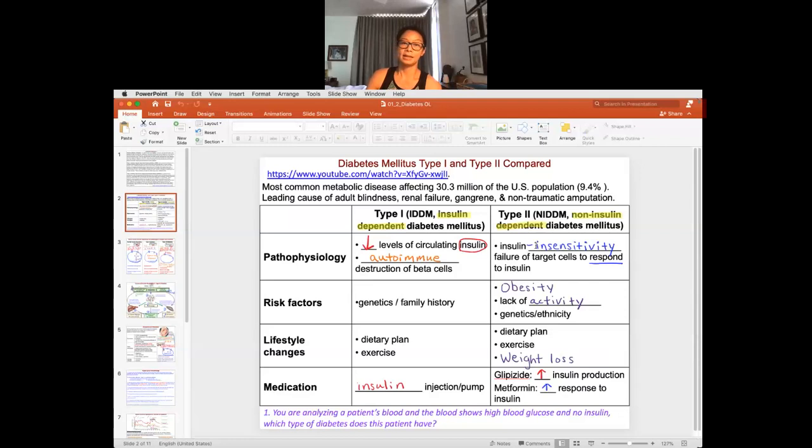Type 1 tends to happen earlier in life because of genetics, family history, and the autoimmune disease. Type 2 tends to be associated with lifestyle. There is some genetic component, but obesity and lack of activity really increase the risk of type 2 diabetes.